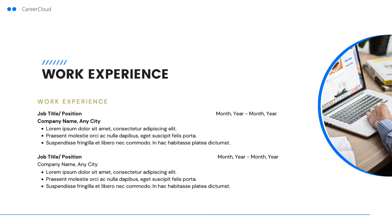Next is your work experience. In this section, list your work history in reverse chronological order, meaning your most recent role should appear first. You should include your job title, the company you worked for, the dates you held the position for each job, and then write three to five bullet points showcasing your most remarkable achievements during your time in that role.